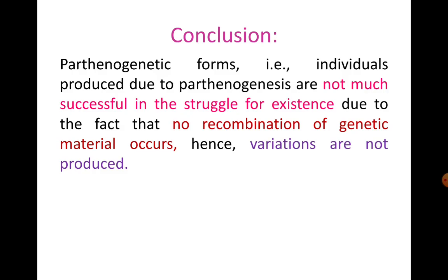To conclude, individuals produced by Parthenogenesis are not always successful in the struggle for existence, because there is no recombination of genetic material and no variation is produced. Without variation, no better characters can be formed in the population, making them very susceptible to environmental changes. The lack of variation also brings a kind of hindrance to the process of evolution. So Parthenogenesis can be viewed as having both advantages and disadvantages.